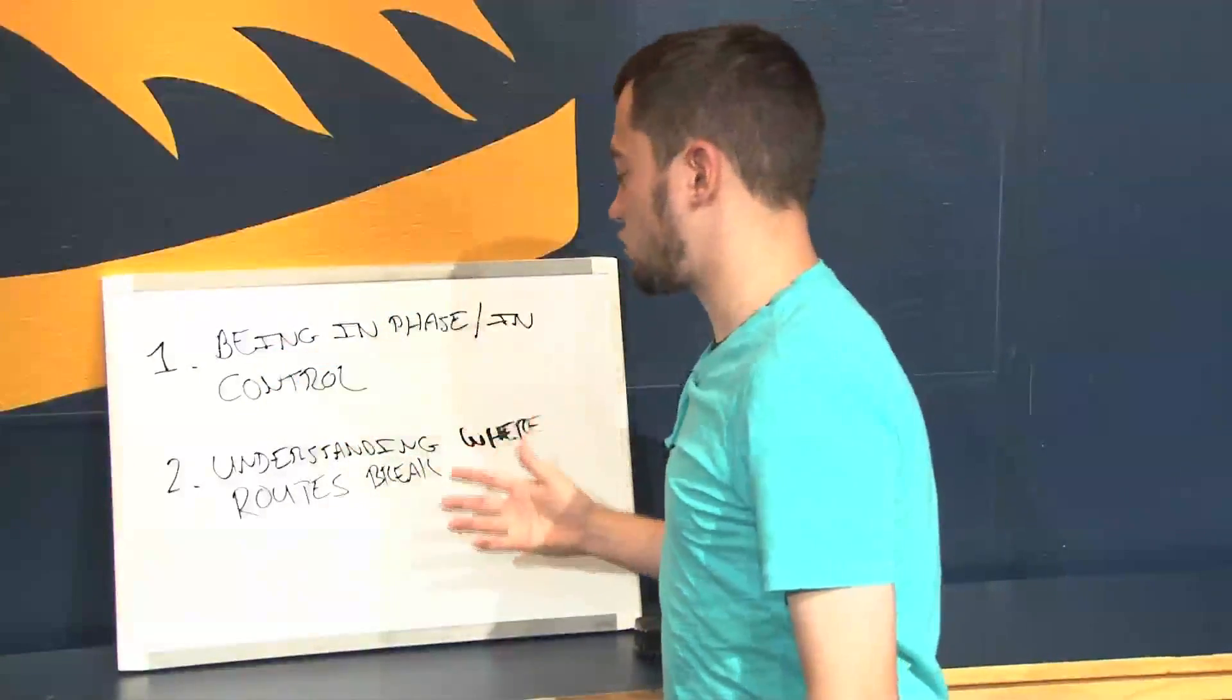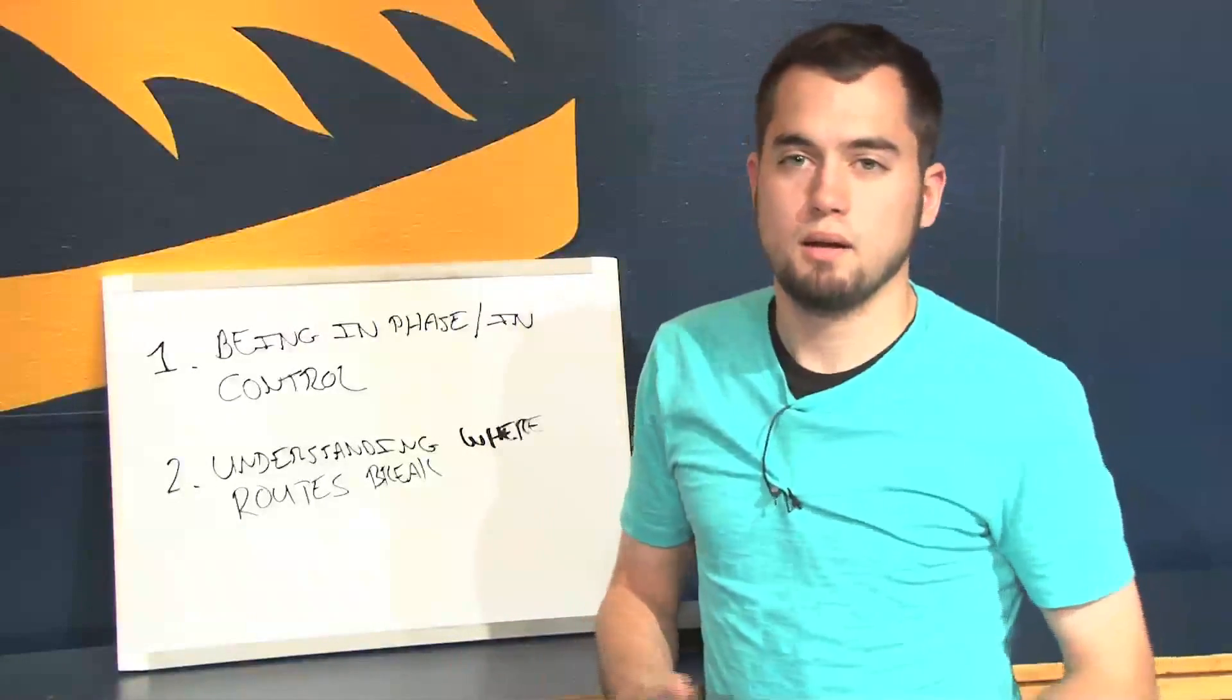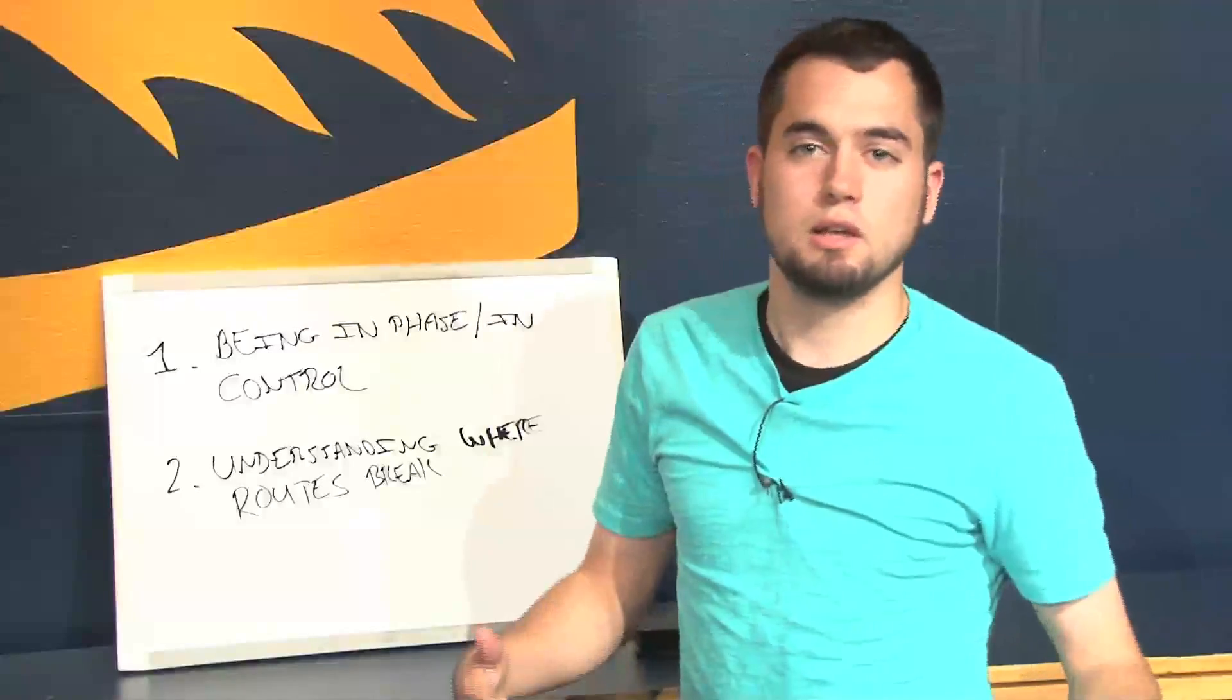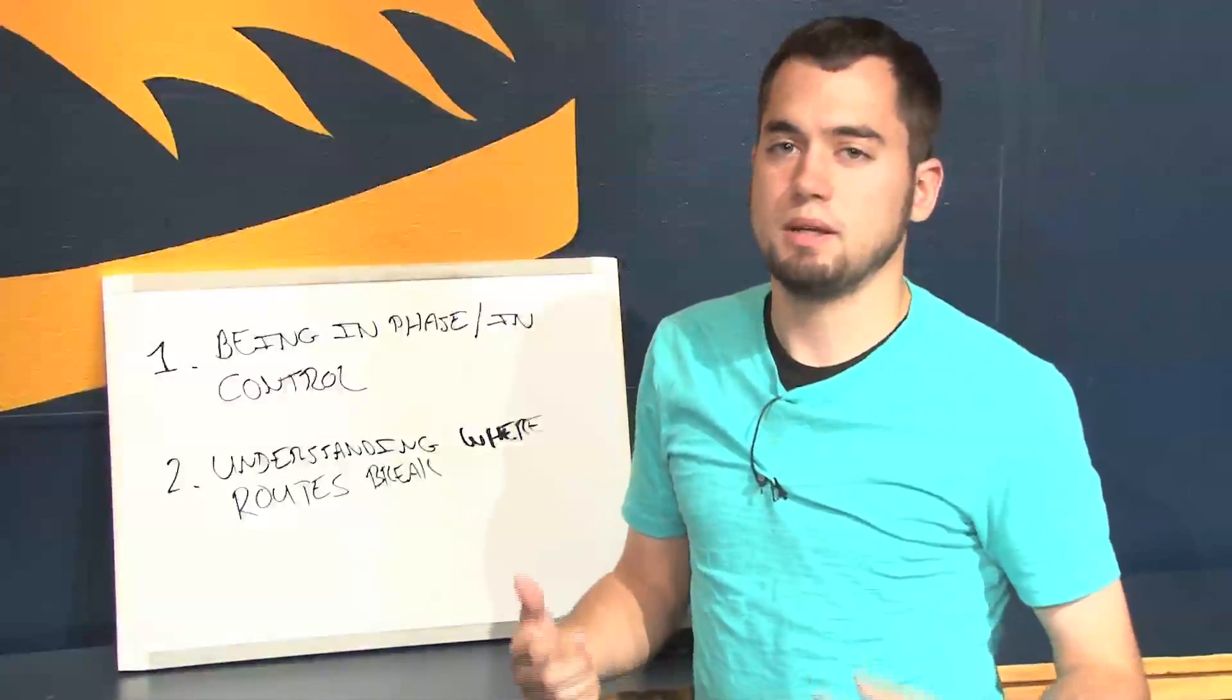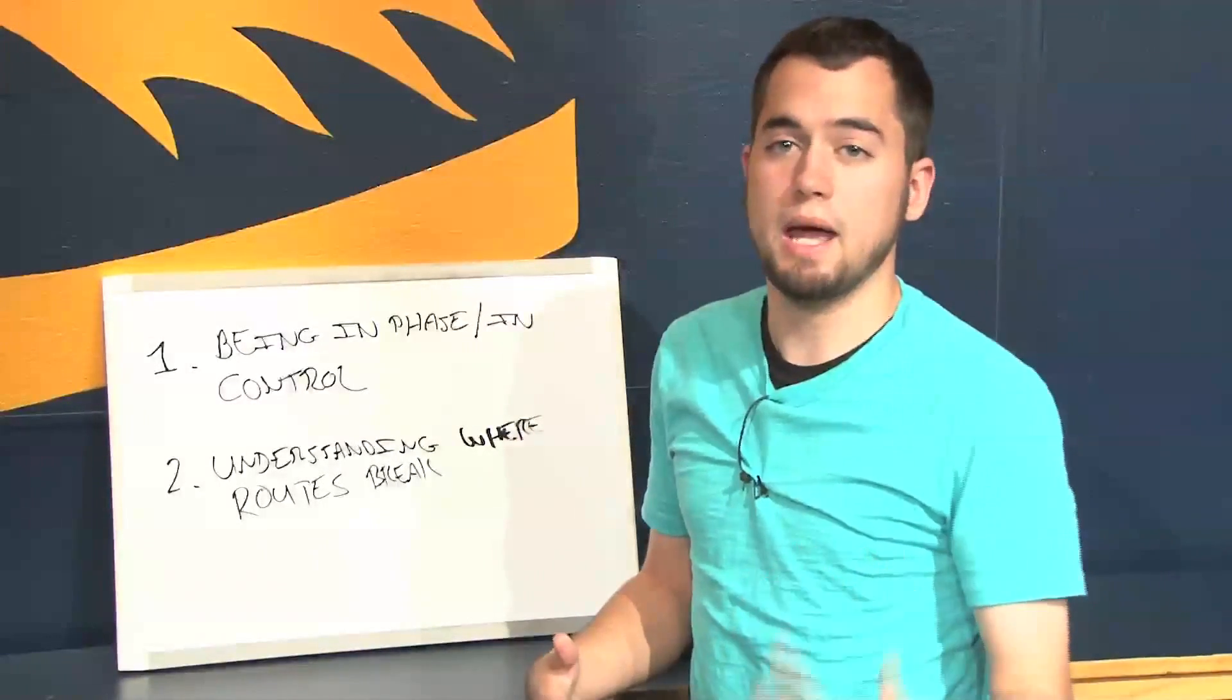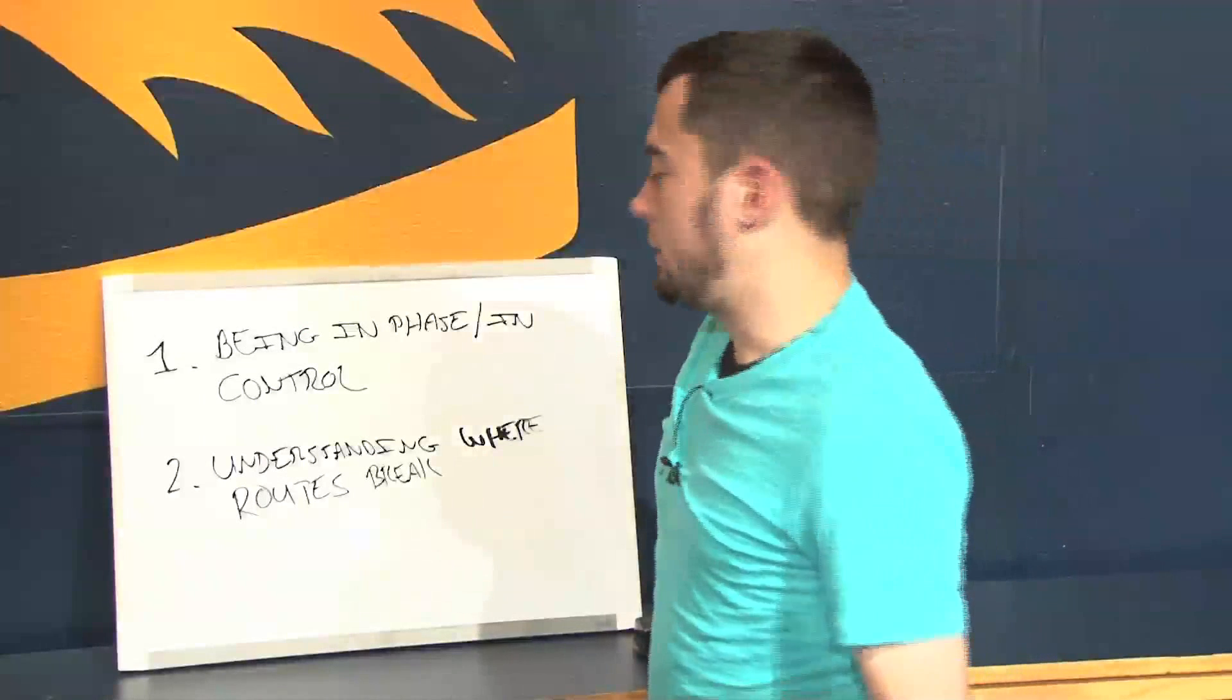One, being in phase and being in control and understanding where routes break. I have a friend of mine, my roommate, who's a big Eagles fan and every single time a cornerback allows a reception he always yells, look at the ball. Philosophically I really just disagree with that because there's a great tweet by Louis Riddick and I agree with this wholeheartedly. He tweeted out earlier this month: how many deep balls would be prevented in one-on-one if DBs would stop looking for the ball when they're not in control of the wide receiver? A lot. And he's absolutely right about that.